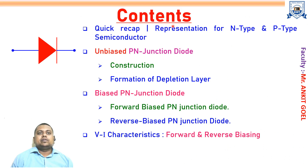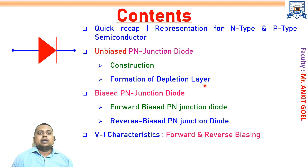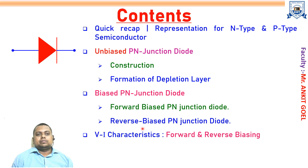In this session, we will discuss the following contents. We will first quickly revise the representation for both N-type and P-type semiconductor. Then we will discuss how the unbiased P-N junction diode is constructed and how the depletion layer has been formed in the unbiased P-N junction diode. Then we will discuss the biasing of the P-N junction diode — there are two types: forward biasing and reverse biasing. Then we will discuss the VI characteristics, both forward and reverse bias characteristics.